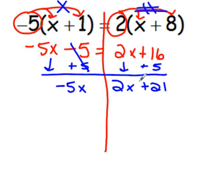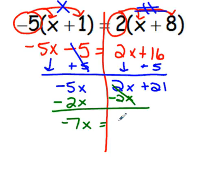Next, I'm going to focus on my right side and move my variable term. I have this 2x here. It is positive, so I'm going to inverse it with negative 2x. That will leave us with negative 7x equals 21.